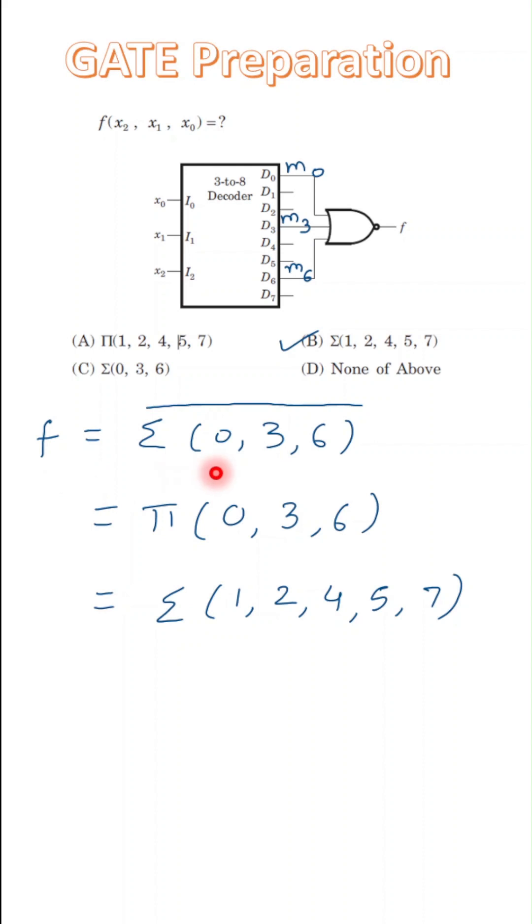So F is equal to the complement of sum of minterms 0, 3, and 6, and the complement of minterm is nothing but the product of maxterm.